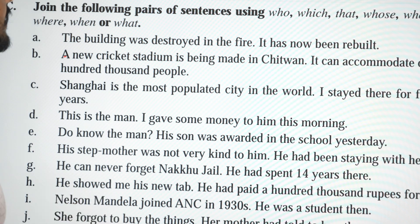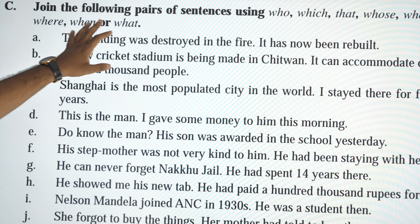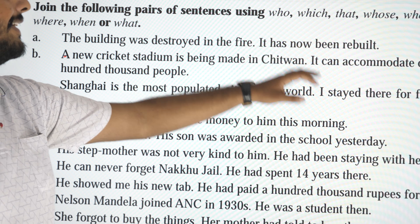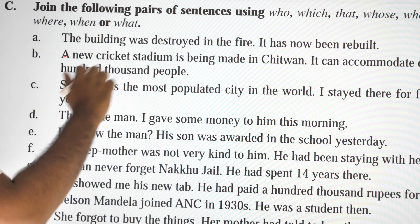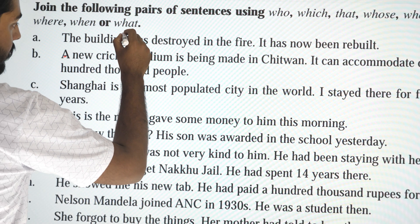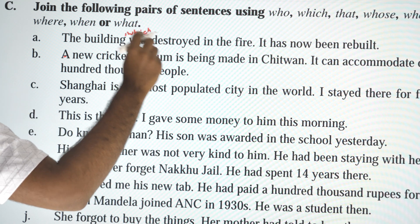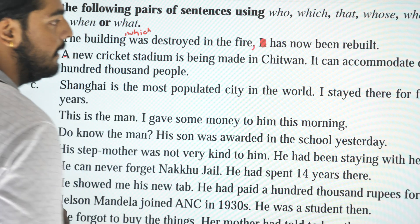Now join the following pairs of sentences using: who, which, that, whose, whom, where, when, what. First pair: 'The building was destroyed in the fire. It has now been rebuilt.' Combined: 'The building which was destroyed in the fire has now been rebuilt.'